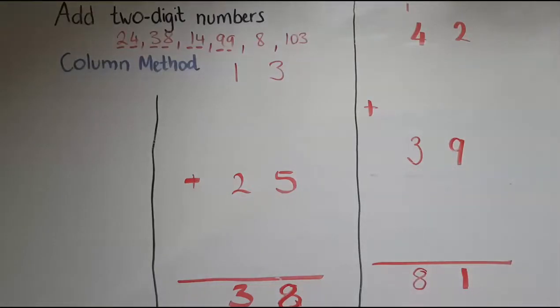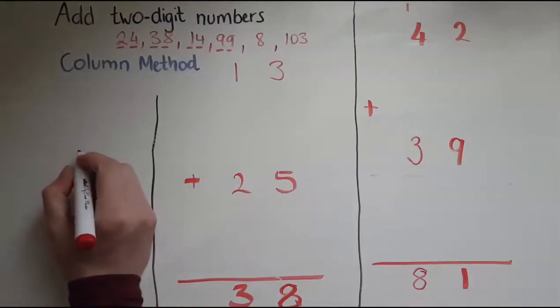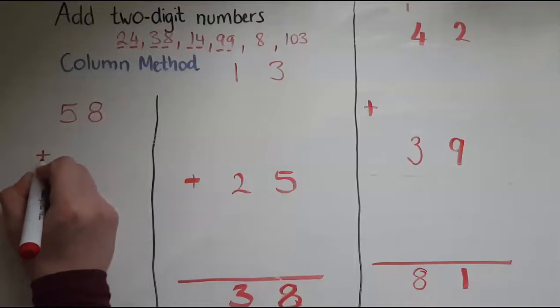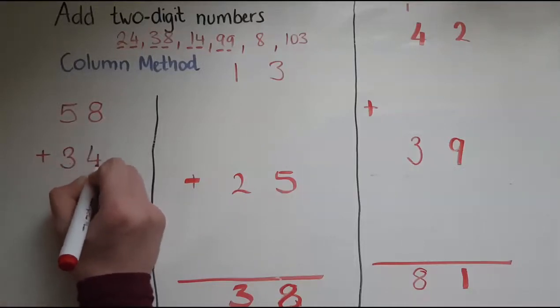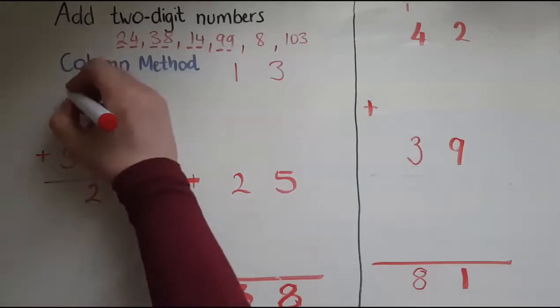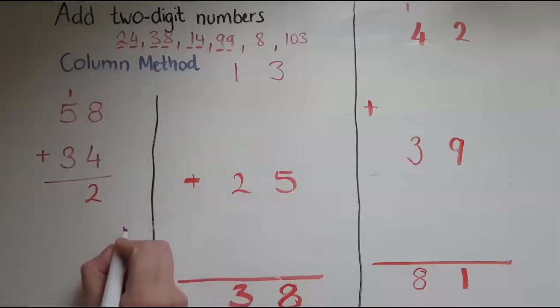I'll do just one more example without the cubes. So I've got now 58 plus 34. So I've got 8 and 4, that makes 12. So I'll put the 2 down and the 10 goes over there. So in this 12, when I added 4 and 8, I'm keeping the units here where the units should be, and this one which represents the 10s goes to the top. So I've got 5 and the 1, 6, and the 3 makes 9. So 58 and 34 makes 92.